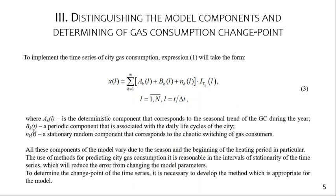B(k,l) is a periodical component associated with the daily life cycles of the city, and M(k,l) is a stationary random component corresponding to the stochastic switching of gas consumption by other customers. All these components of the model vary due to seasonality and the beginning of the heating period in particular.